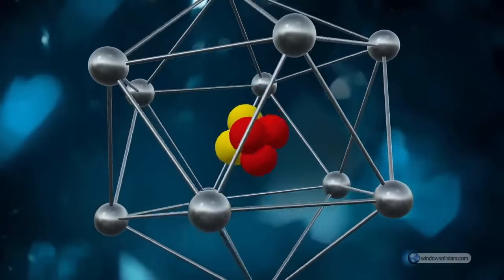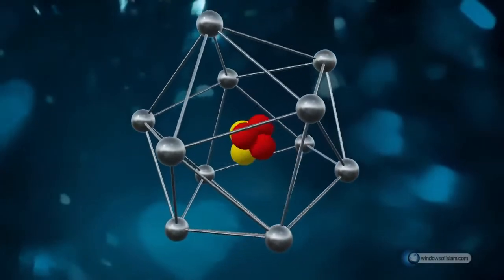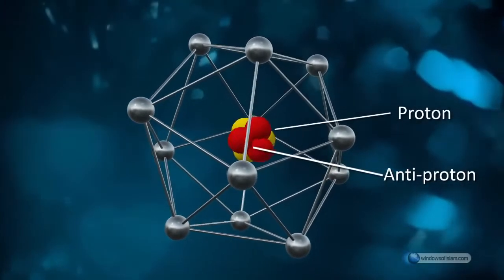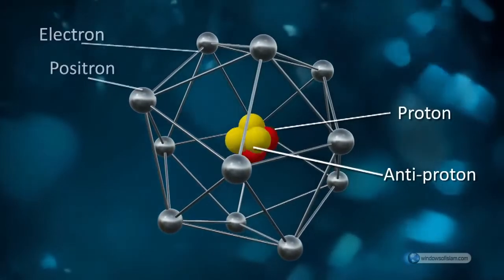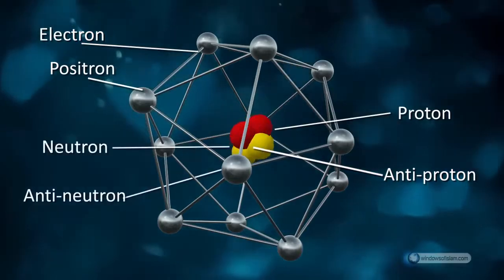Creation in pairs is also valid for the smallest particles of atoms. A proton has its pair, anti-proton. An electron is coupled with a positron, and a neutron possesses an anti-neutron.